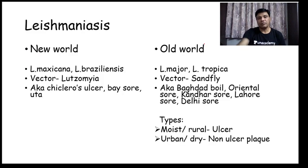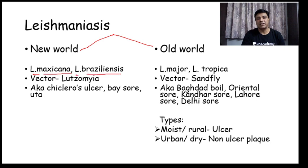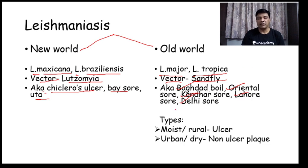Leishmaniasis is broadly classified into new world and old world. New world is caused by Leishmania mexicana and Leishmania braziliensis, with vector Lutzomyia, also known as chiclero's ulcer, bauru, or uta. Old world Leishmaniasis is caused by Leishmania major and Leishmania tropica, with vector sandfly, also known as Baghdad boil, Oriental sore, Kandahar sore, Lahore sore, or Delhi sore. It is further classified into moist or rural — where you see ulcer — and urban or dry — where you see plaque.